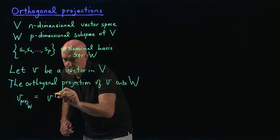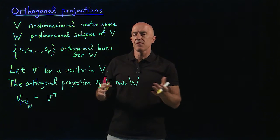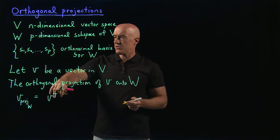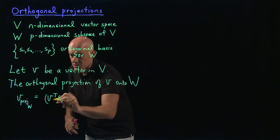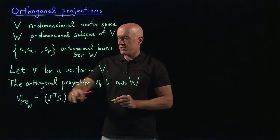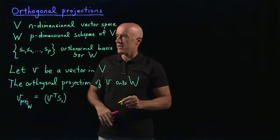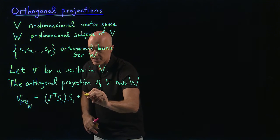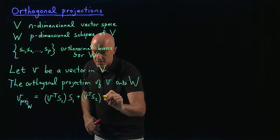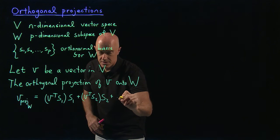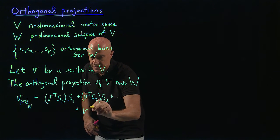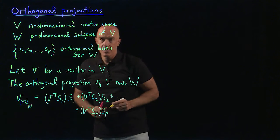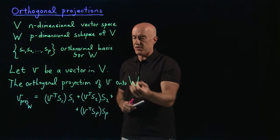To project v onto W, we work with column vectors. We take v transpose times s1 — this is a scalar representing the value of v along s1 — and multiply by the vector s1, plus v transpose s2 times the vector s2, plus finally v transpose sp times the vector sp.